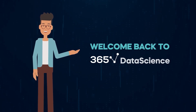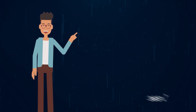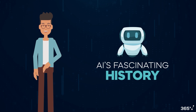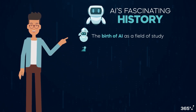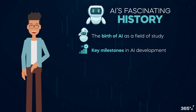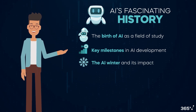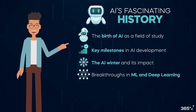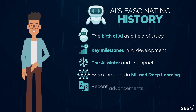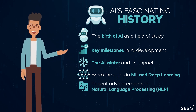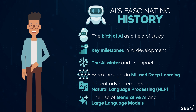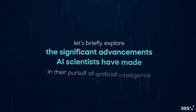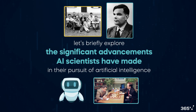Hi there and welcome back to 365 Data Science. In today's video, we'll explore AI's fascinating history. We'll cover the birth of AI as a field of study, key milestones in AI development, the AI winter and its impact, breakthroughs in machine learning and deep learning, recent advancements in natural language processing, and the rise of generative AI and large language models. Now let's briefly explore the significant advancements AI scientists have made in their pursuit of artificial intelligence.